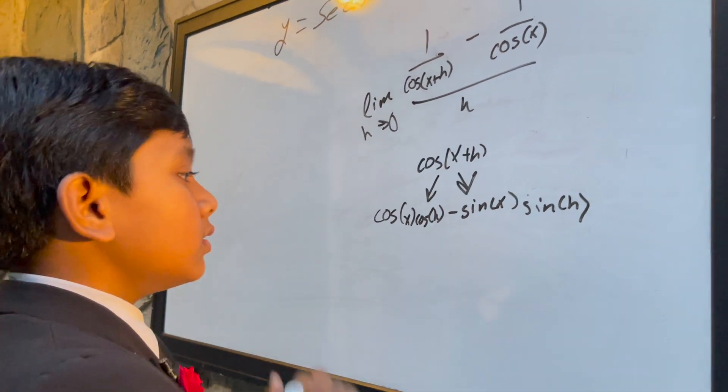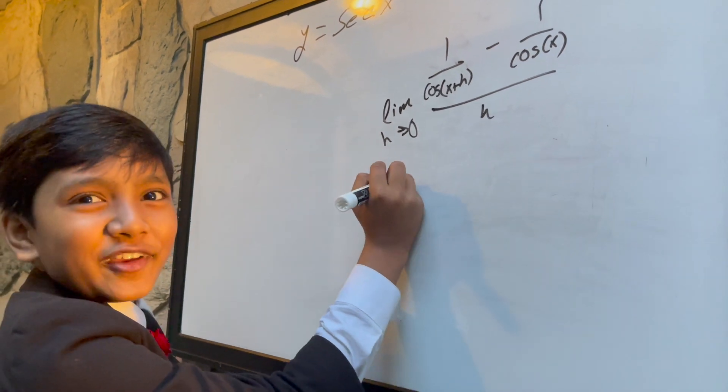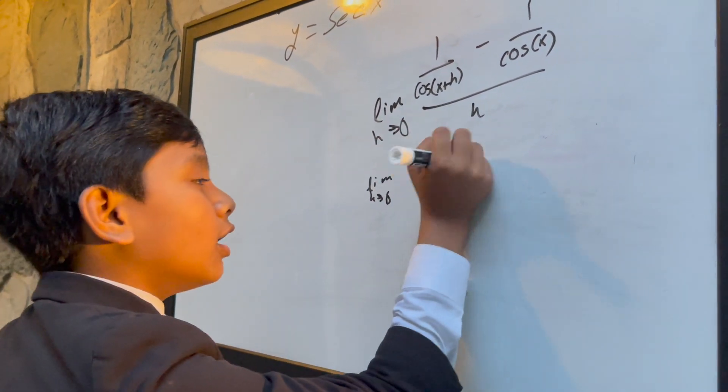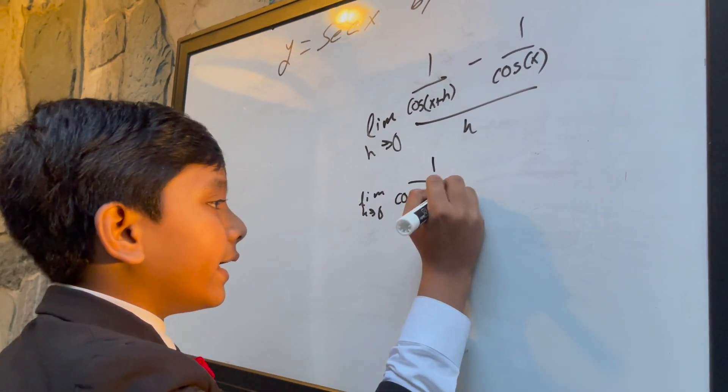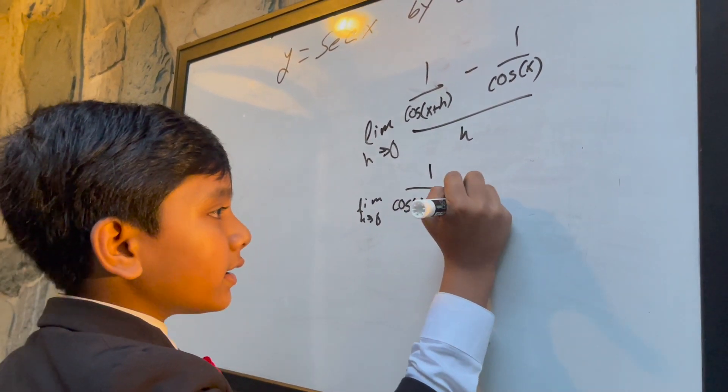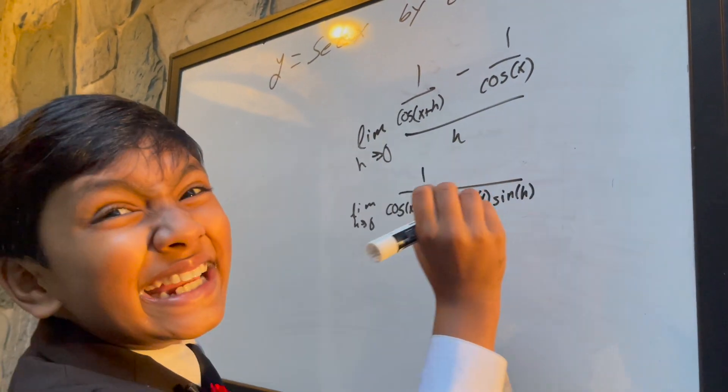So, we're going to be using that right over here, right over now. So, cosine x cosine h minus sine of x sine of h. Man, that's a real mouthful, ain't it?